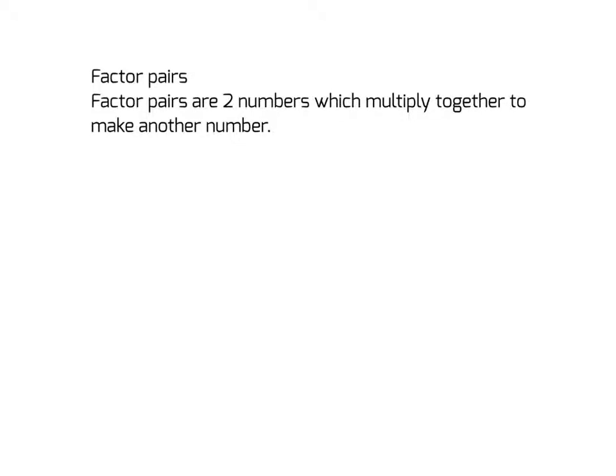Factor pairs. Factor pairs are two numbers which multiply together to make another number. So if I had the number 8, I would be able to make some factor pairs. I could make a pair of 1 and 8, or 2 and 4.